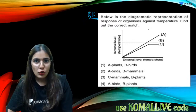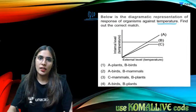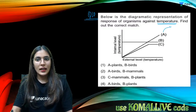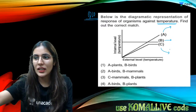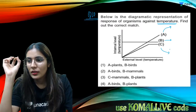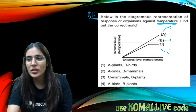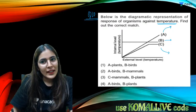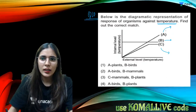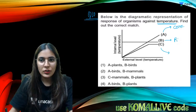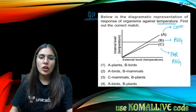Question number ten: the graph shows responses of organisms against temperature. A represents conformers — their internal temperature matches the environment. B represents regulators — mammals and birds. C represents partial regulators. Conformers include plants, reptiles, and amphibians. Regulators are mammals and birds. Partial regulators are those that avoid unfavorable conditions through hibernation, aestivation, or migration.